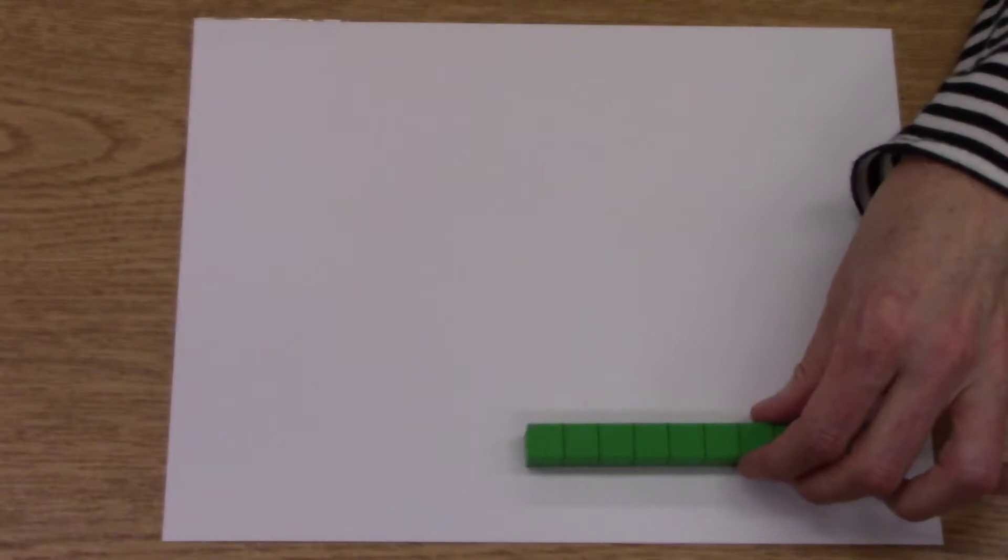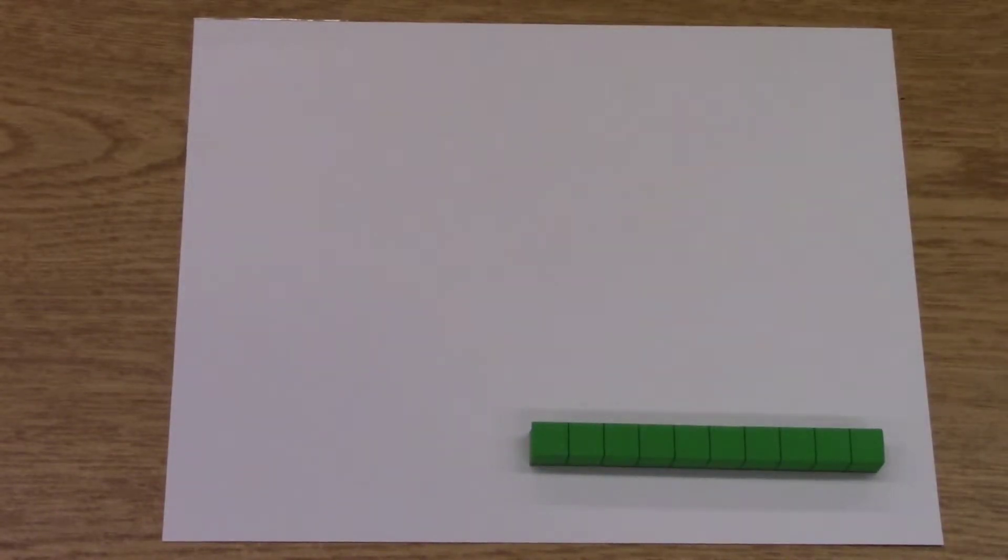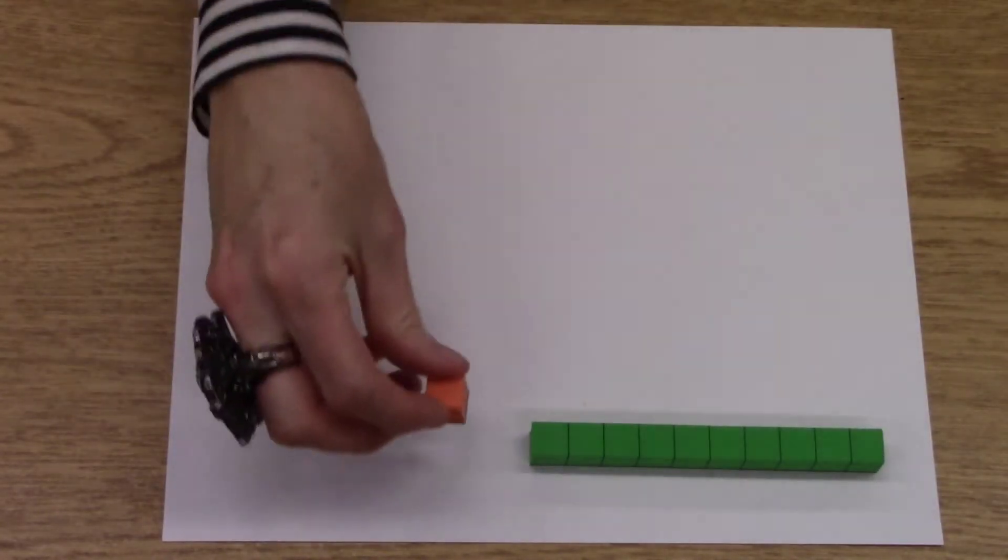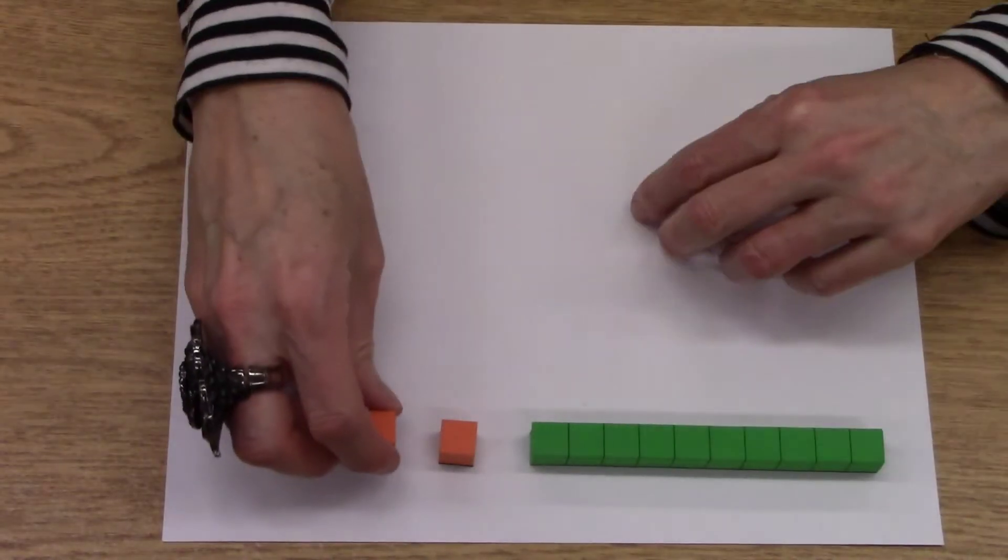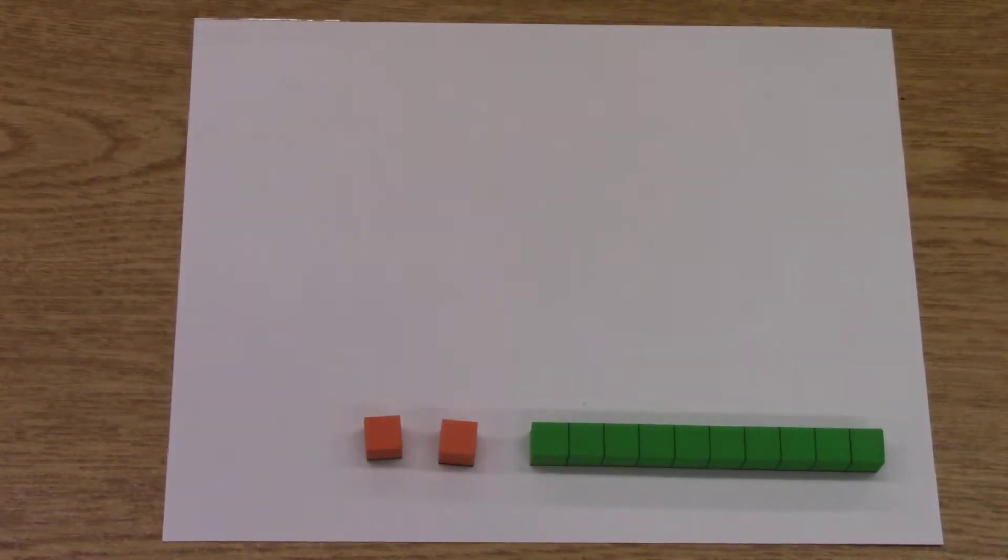I will use rods to represent 10s and I will use units to represent 1s. I need to represent 12 five times. I will show you 12 using a rod and 2 units. Now I need to do that 4 more times for a total of 5 groups of 12.